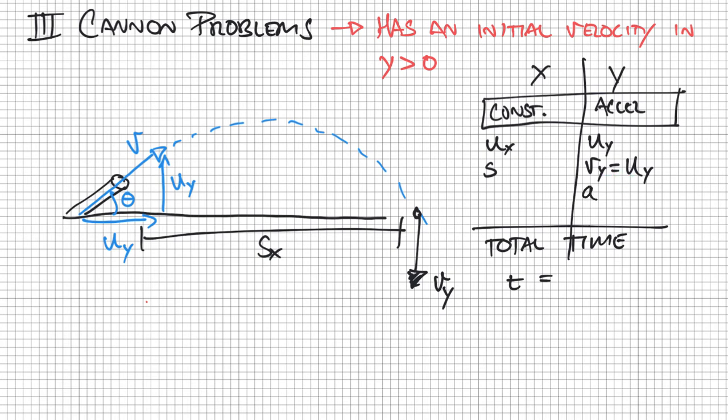My acceleration again would be negative 10. And then my displacements, you kind of have two different displacements. So displacement total, if it's coming back to the same point, it's going to be zero or the displacement half would be kind of the max height.